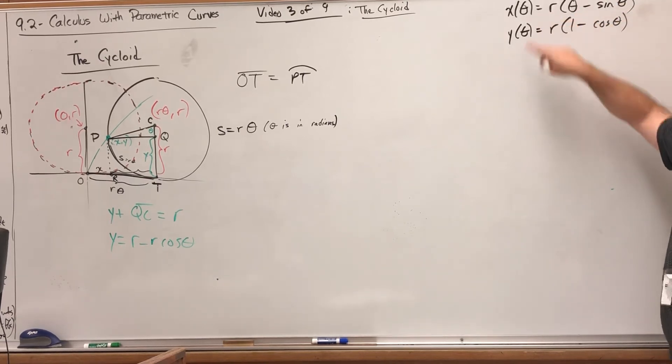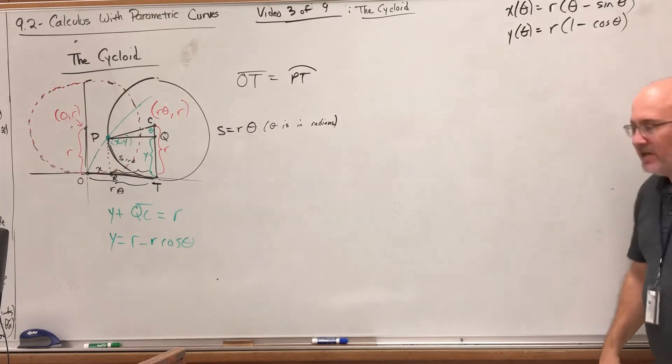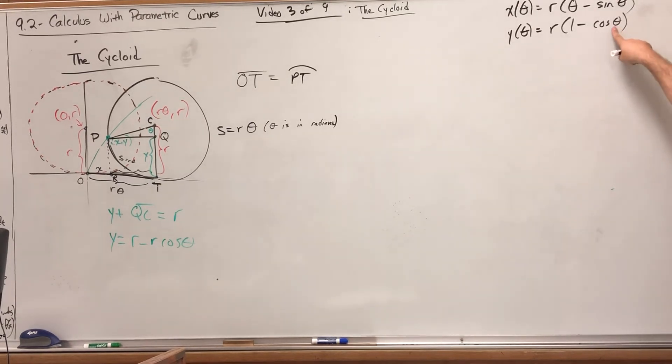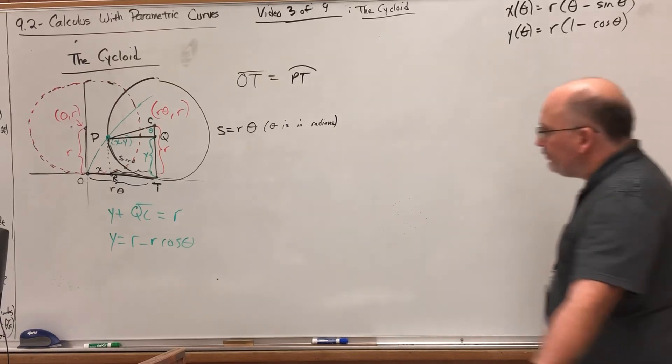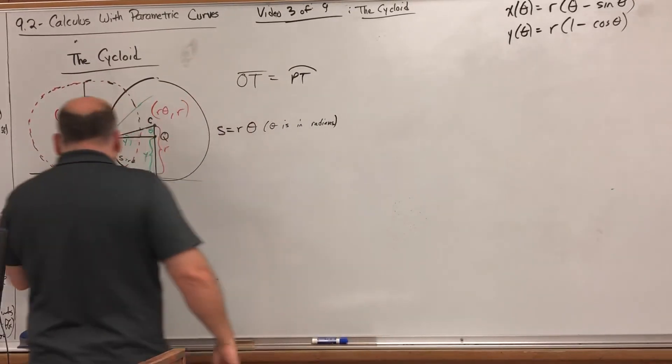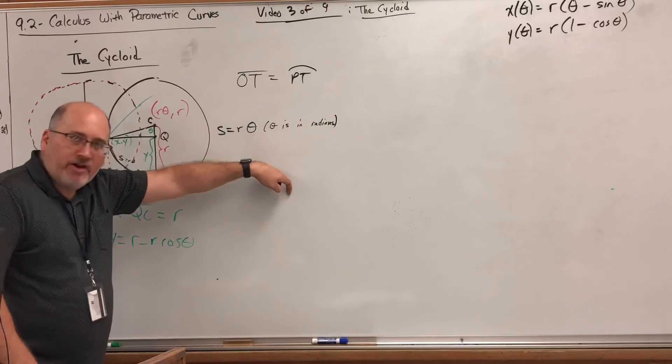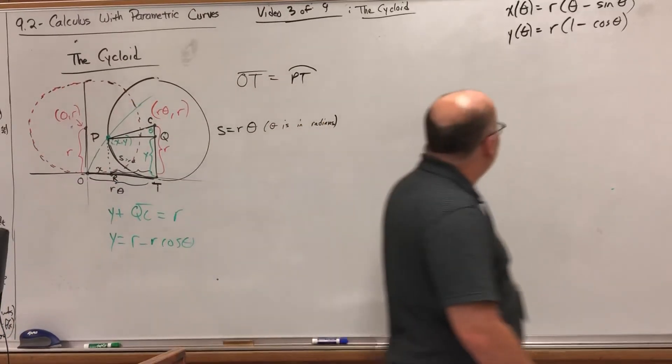By doing just a little bit of analysis, starting at theta equals zero: zero minus sine of zero is zero, our x-coordinate is zero. That makes sense, we haven't rotated yet. When theta equals zero, cosine of zero is one, one minus one is zero times the radius is zero. So yeah, we're at the origin.